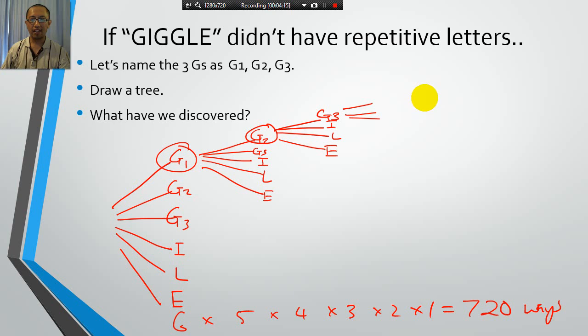But you're going to end up with some options that are repeated. So, for example, G1, G2, G3, I, L, E is exactly the same as, let's say, G1, G3, G2, I, L, E.